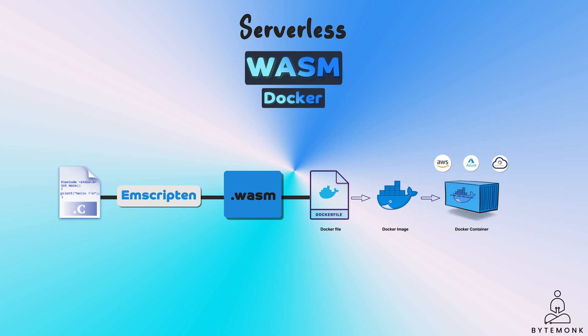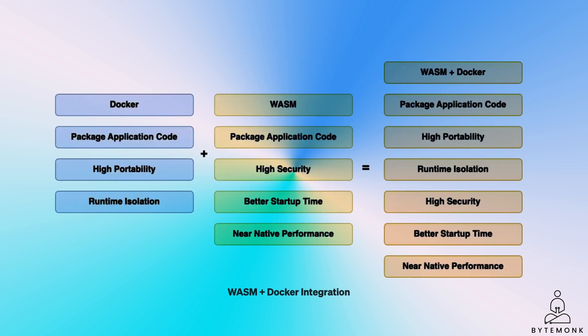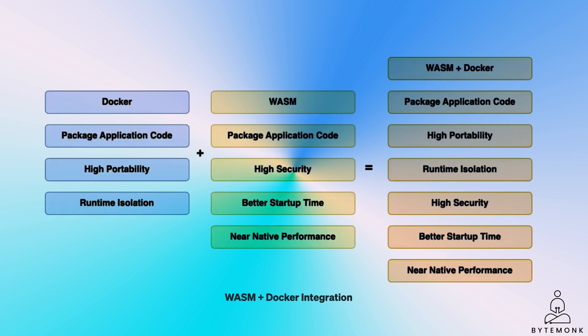Wasm is generally considered to be more portable than Docker, because Wasm modules are designed to be platform-neutral and can run on any platform that supports Wasm. Docker images, on the other hand, are not necessarily always portable, and you may need to make some modifications before deploying to a specific platform. In summary, Wasm and Docker can be used together in a variety of ways. If you are looking for a way to build efficient, portable, and secure applications, I recommend considering using these technologies together.